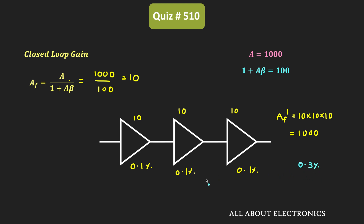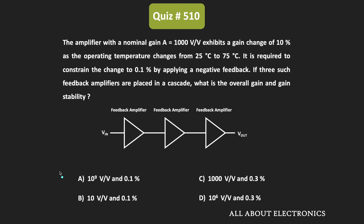So for the given cascaded system, the overall gain is equal to 1000, while the overall gain stability is equal to 0.3%. This is the correct answer for the given question.